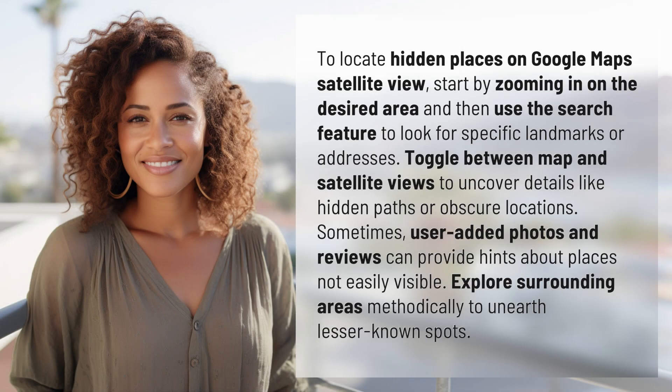To locate hidden places on Google Maps satellite view, start by zooming in on the desired area and then use the search feature to look for specific landmarks or addresses. Toggle between map and satellite views to uncover details like hidden paths or obscure locations.